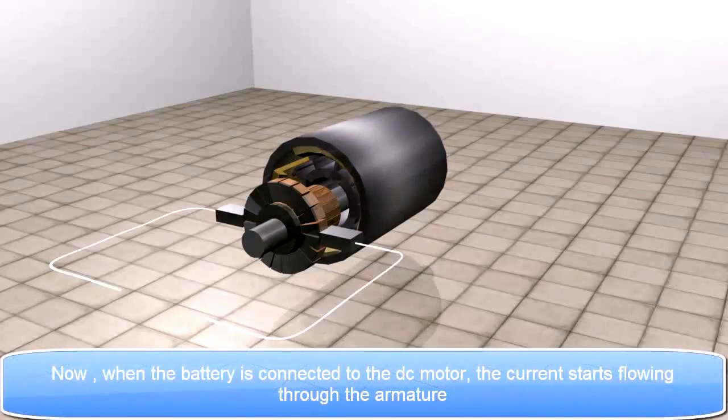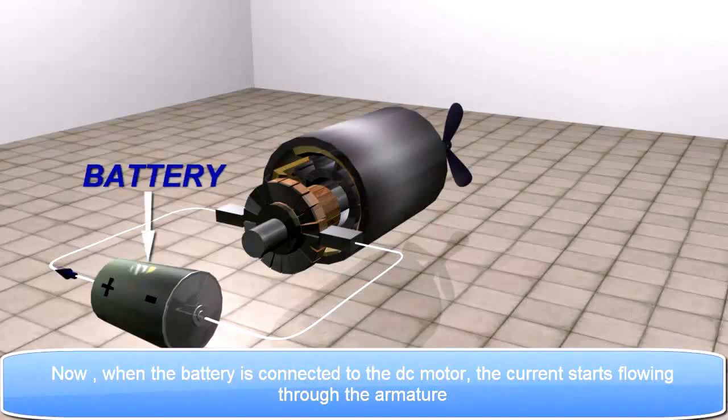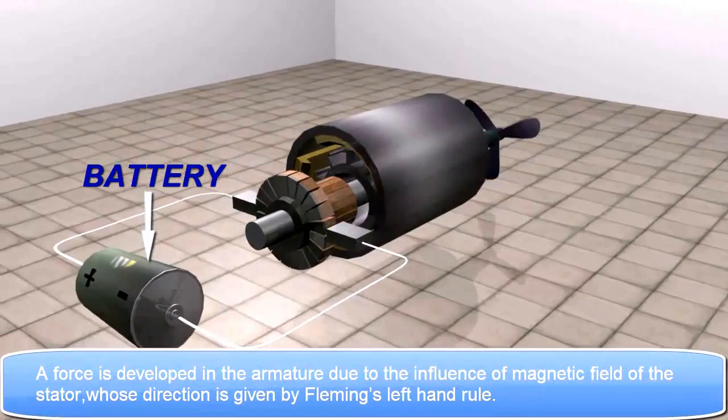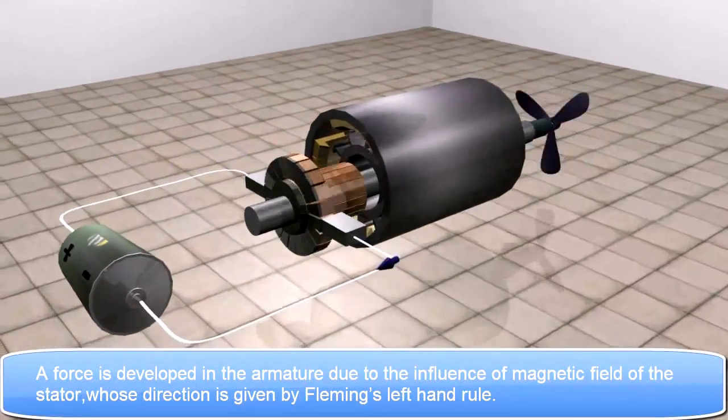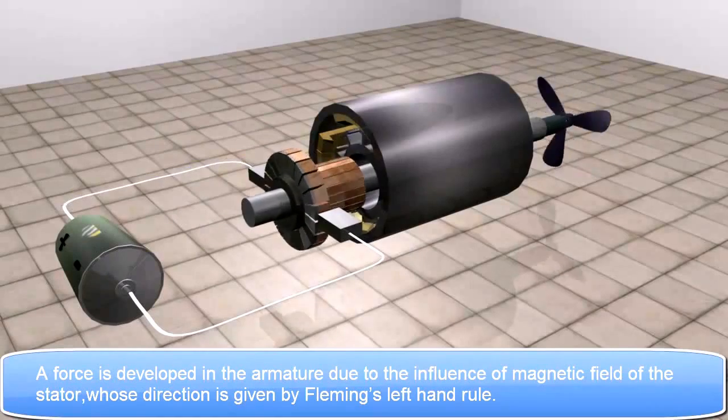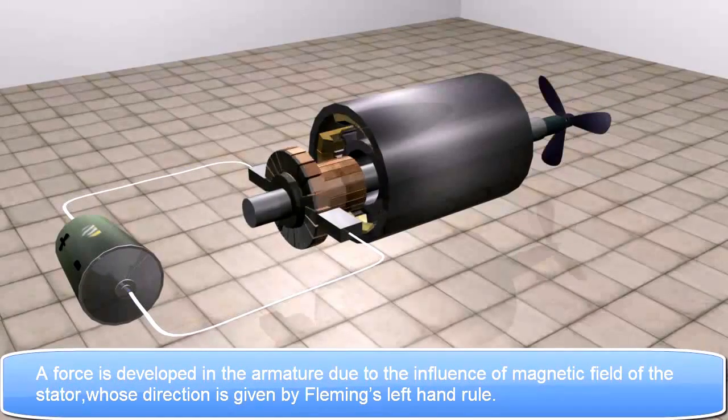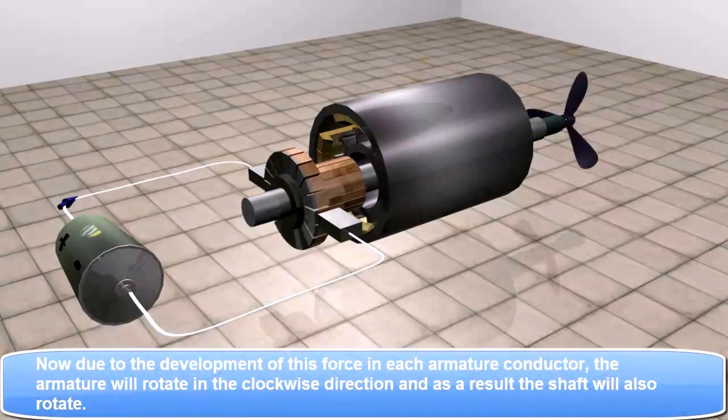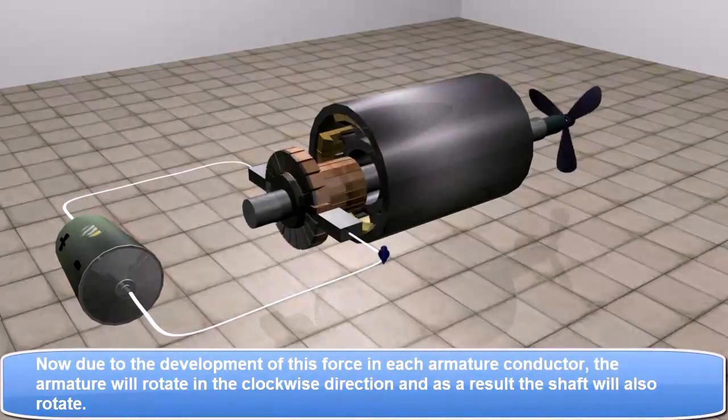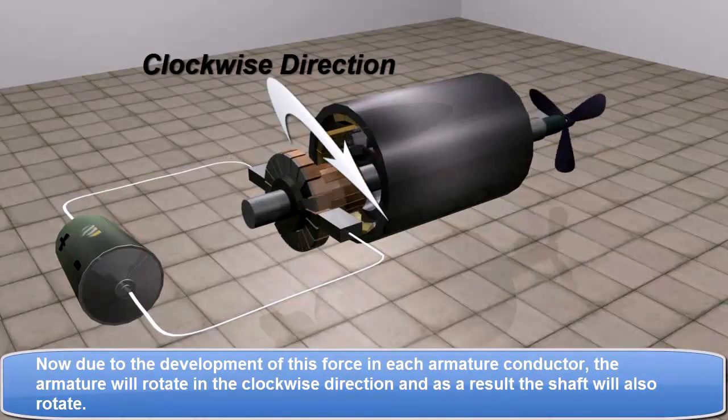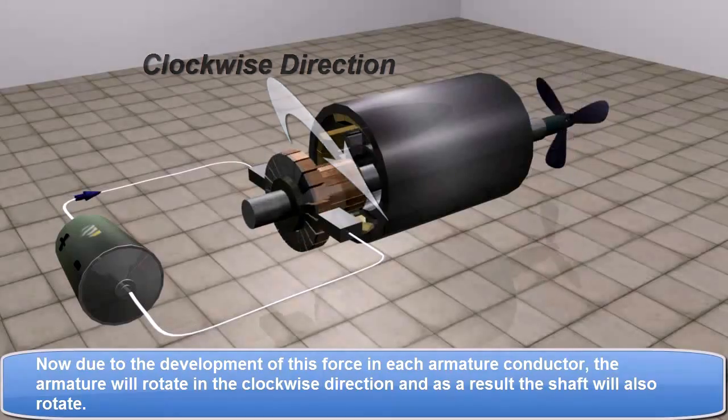Now, when the battery is connected to the DC motor, the current starts flowing through the armature. A force is developed in the armature due to the influence of magnetic field of the stator, whose direction is given by Fleming's left-hand rule. Now, due to the development of this force in each armature conductor, the armature will rotate in the clockwise direction. And as a result, the shaft will also rotate.